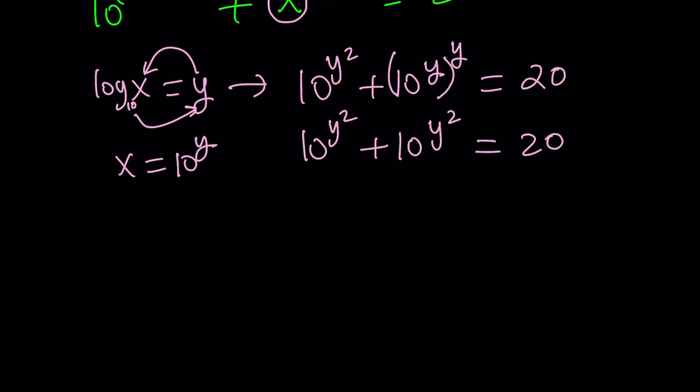Now notice that these two things are equal. So, I can just write this as 2 times 10 to the power y squared equals 20, and then dividing both sides by 2 yields 10 to the power y squared equals 10.